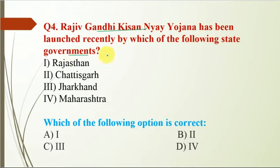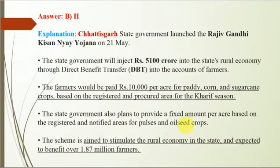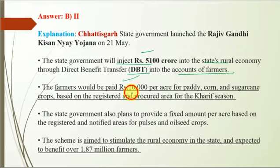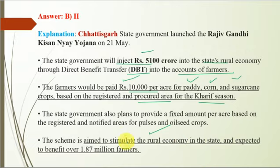Question 4: Rajiv Gandhi Kisan Nyai Yojana has been launched recently by which state government? The correct option is B — Chhattisgarh. Under this scheme, the state government of Chhattisgarh will inject Rs. 5,100 crore into the state's rural economy through DBT into the accounts of farmers. Farmers would be paid Rs. 10,000 per acre for paddy, corn, and sugarcane crops. The scheme is aimed at stimulating the rural economy and is expected to benefit over 1.87 million farmers.